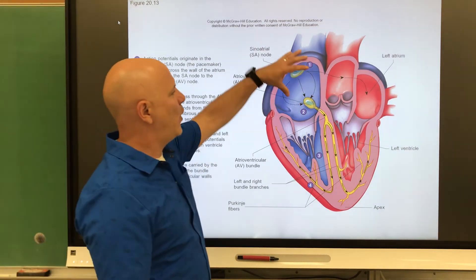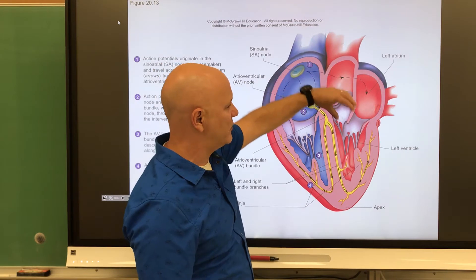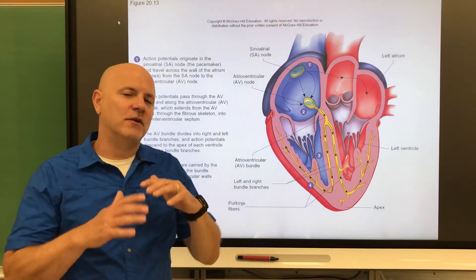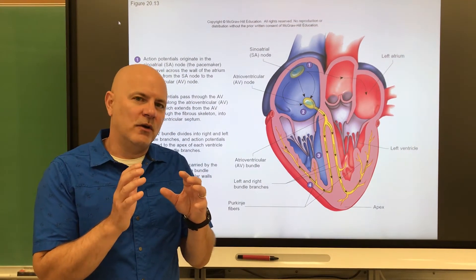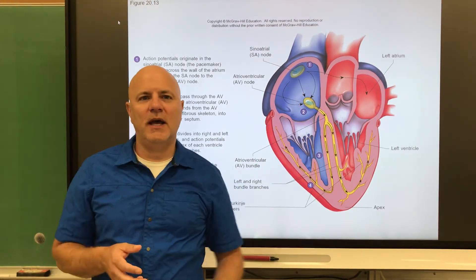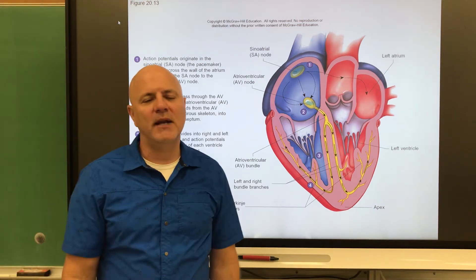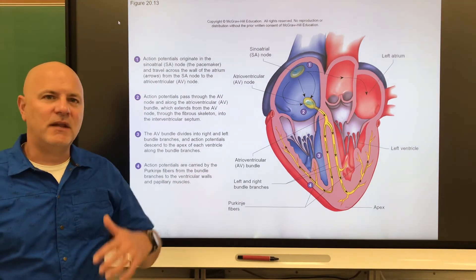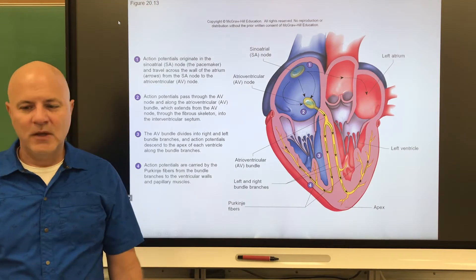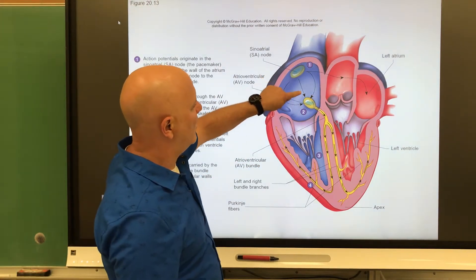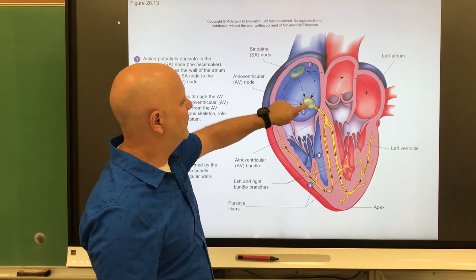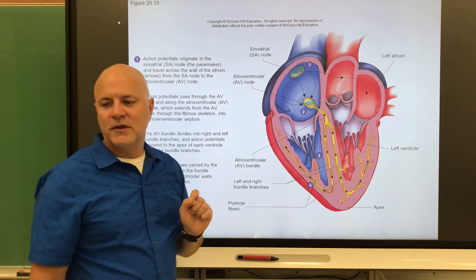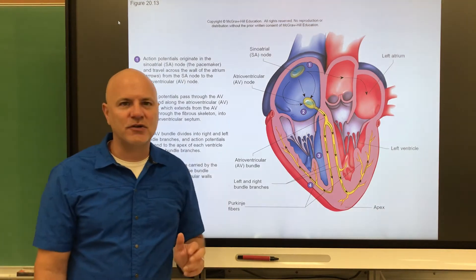The SA node sends impulses to surrounding cells, creating a wave of contraction moving from the right atrium to the left atrium, pushing blood down into the ventricles. If you slowed down footage of a contracting heart, you could see the right atrium contracts slightly ahead of the left. The typical heart rate is 60–100 times per minute. Those impulses then move down the internodal pathway — the path between the SA node and the next node.